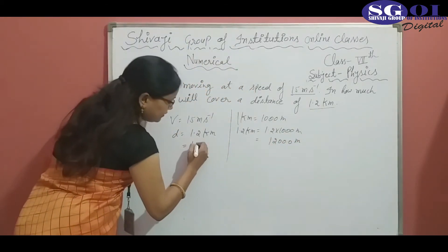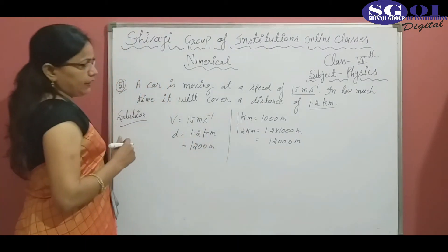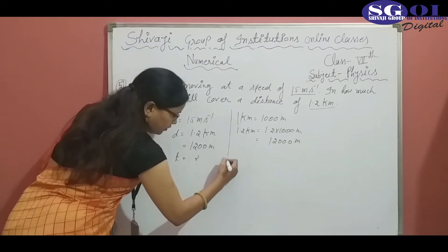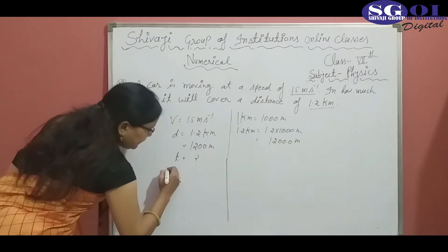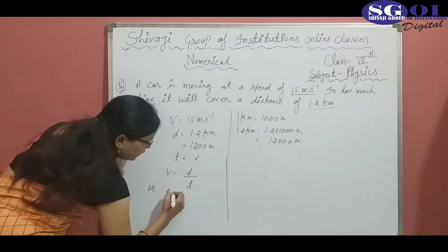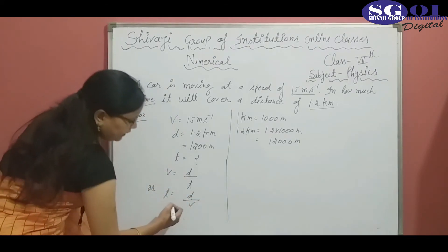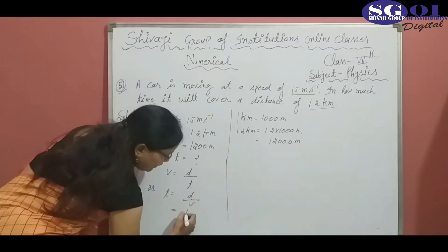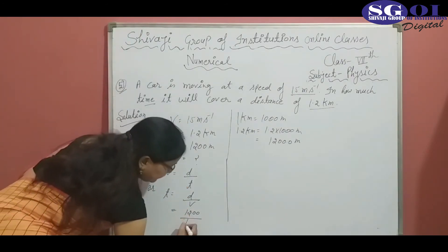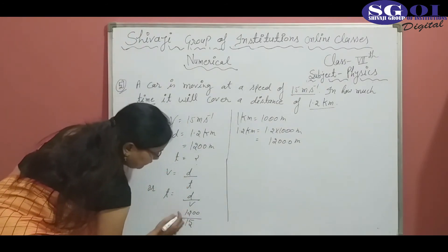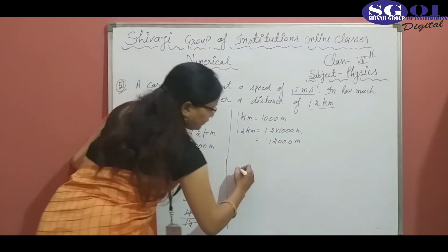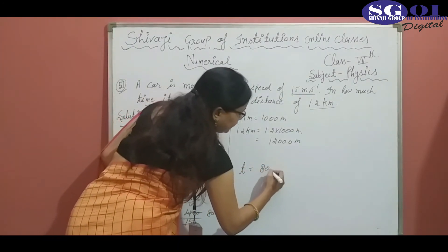So distance is 1200 meter, and we have to find out time. The formula: speed equals distance divided by time, or time equals distance divided by speed. Here, distance is 1200 meter and speed is 15. After dividing, we get 80 seconds.